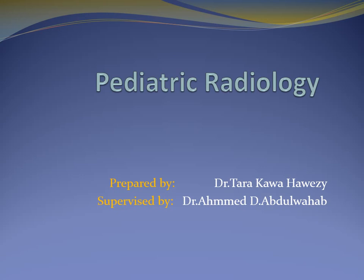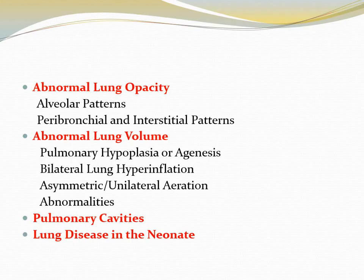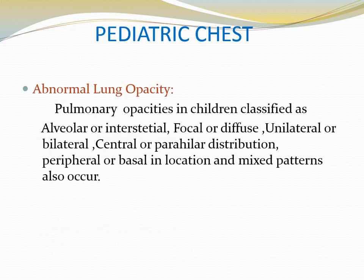Today our subject is about pediatric radiology, pediatric chest. We discussed abnormal lung opacity, abnormal lung volume, pulmonary cavities, and lung disease in the neonate. Pulmonary opacities in children are classified as alveolar or interstitial, focal or diffuse, unilateral or bilateral, central or perihilar distribution, peripheral or basal in location, and mixed pattern also occur.